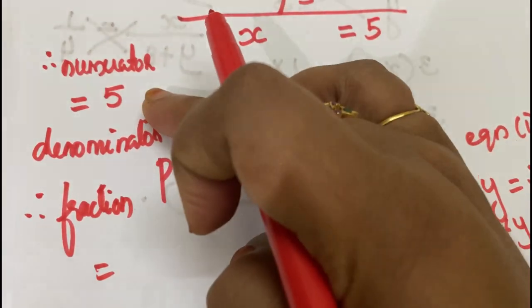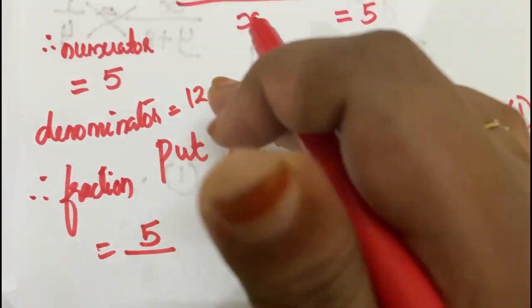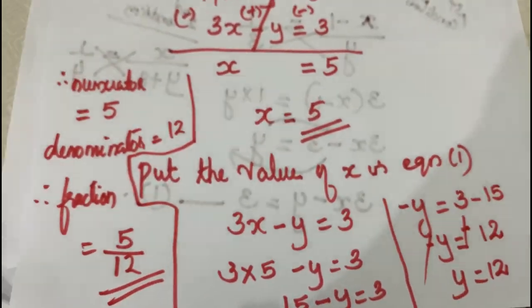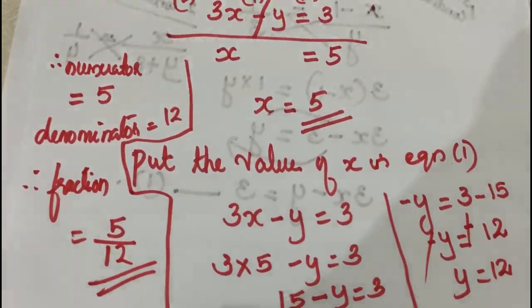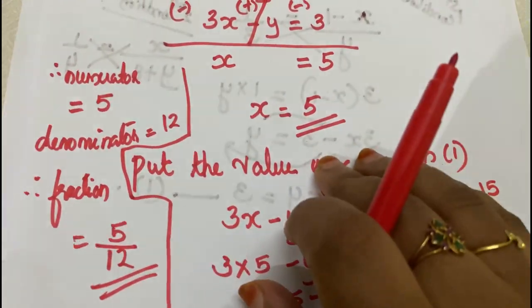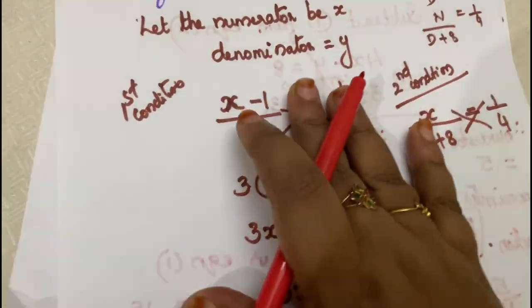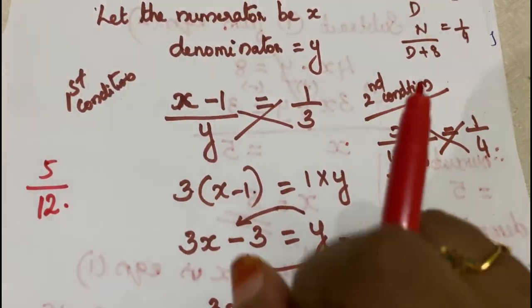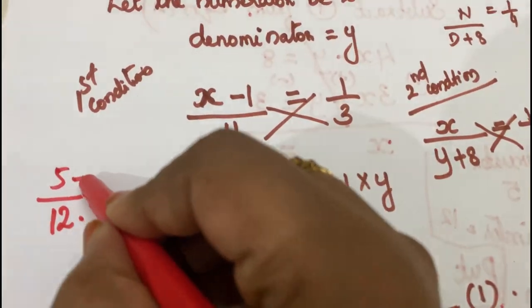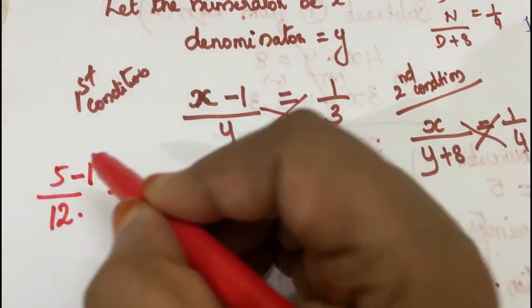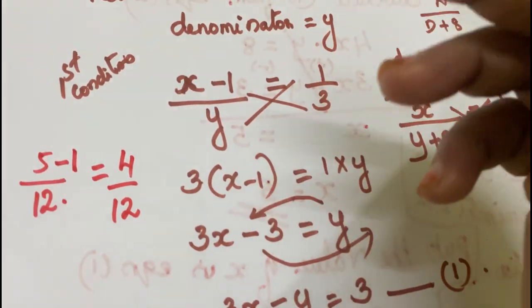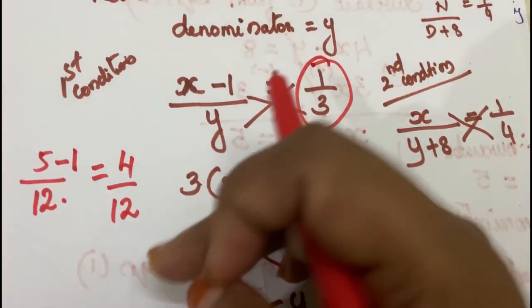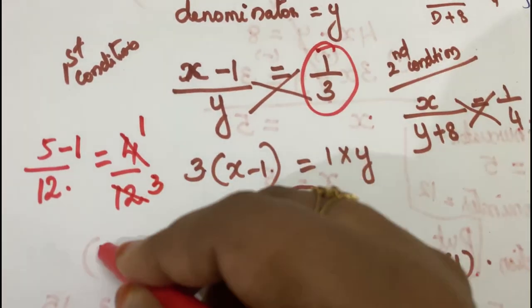Therefore, the fraction equals numerator by denominator, which is x by y, equal to 5 by 12. This is the answer. Checking: 5 minus 1 equals 4, and 4 by 12 equals 1 by 3. Correct — the first condition is verified.